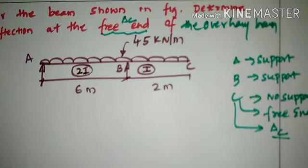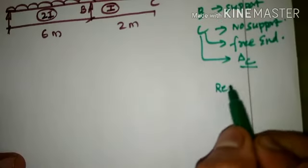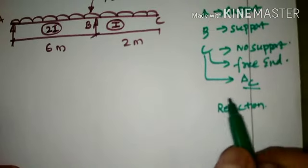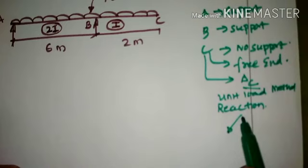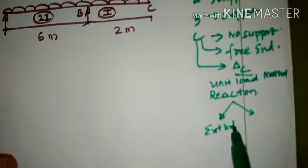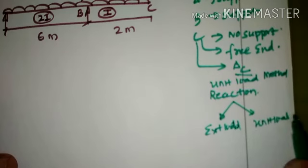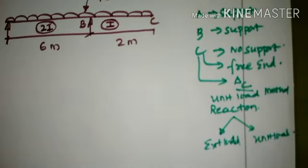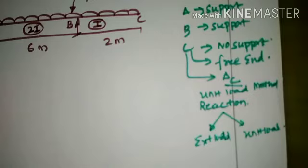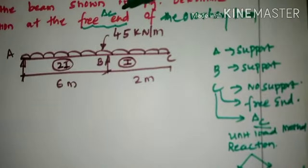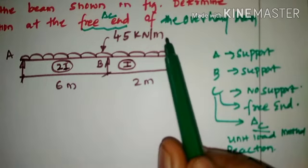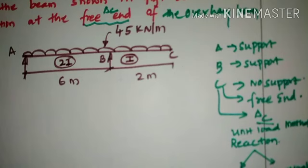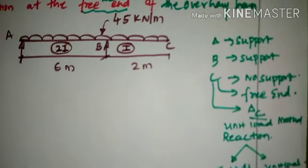To begin with, the first task is to find out the reactions. This problem will be solved by the unit load method, so reactions will be calculated for two cases: first, reaction due to the external load, and second, reaction due to the unit load. We impose a unit concentrated force at the position where deflection needs to be evaluated — at point C.